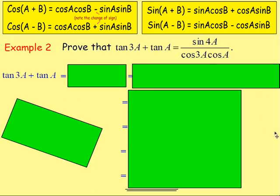Example 2: Prove that tan(3a) + tan(a) is equal to sin(4a) / (cos(3a)·cos(a)). The first thing to look at is that we've got tan, and in our answer we're wanting to get down to something with sin and cos in it. So we want to swap tan first of all with something in terms of sin and cos.